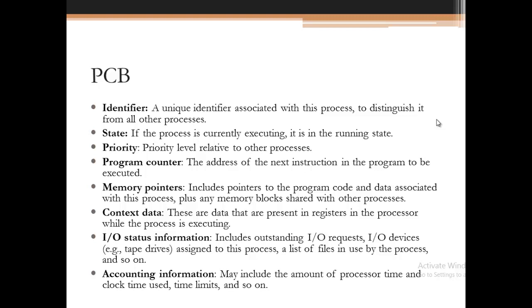Memory pointers include pointers to the program code and data associated with the process, plus any memory blocks shared with other processes — essentially pointing to the portions of memory being used or shared by the current process. Context data refers to the data present in processor registers while the process is executing. This is very important in multi-tasking or time-sharing operating systems, when a process leaves the processor before being completed and terminated.